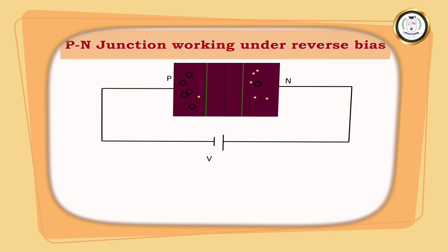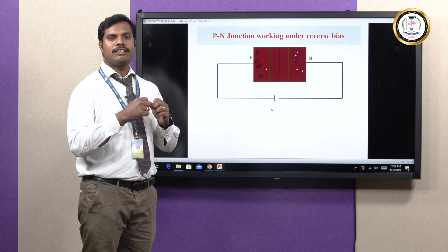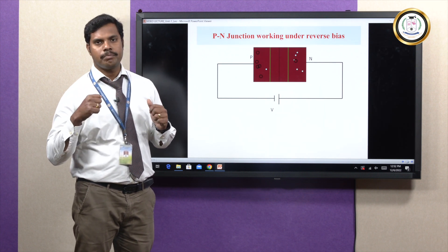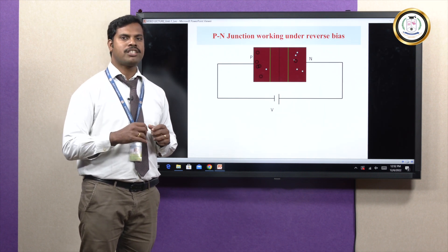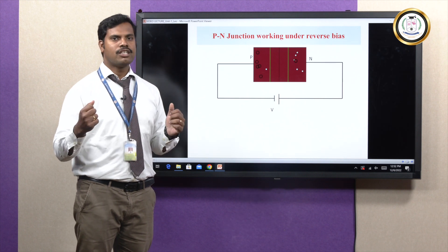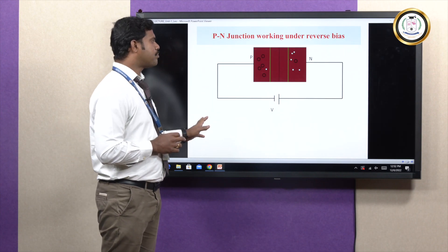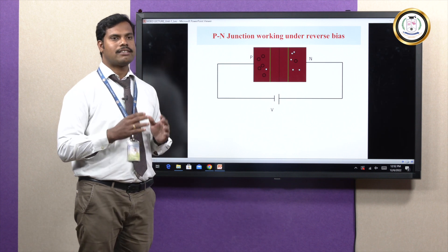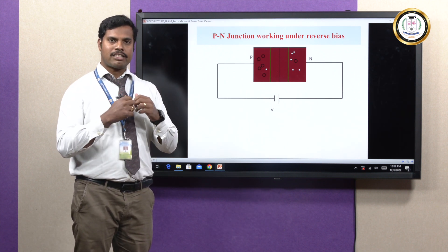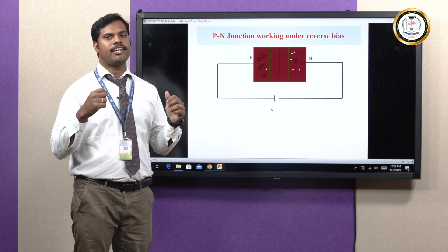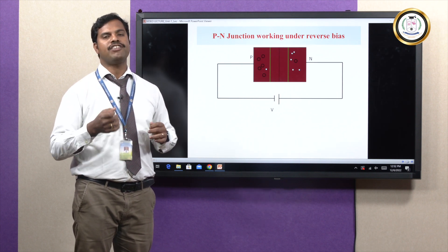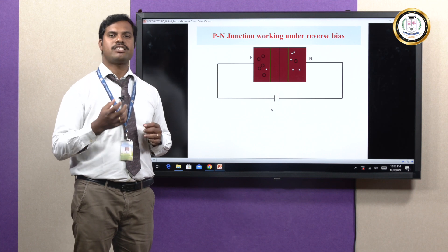As the depletion width increases, at one point it enters the breakdown region — there is a sudden rise in current value. In reverse bias, the depletion width increases gradually and at one point it completely breaks down; we call this voltage the breakdown voltage.